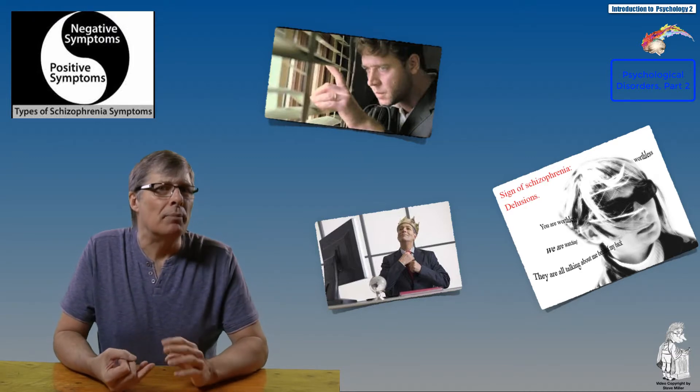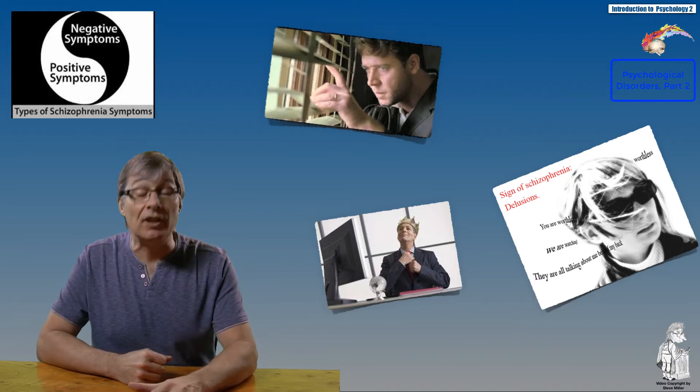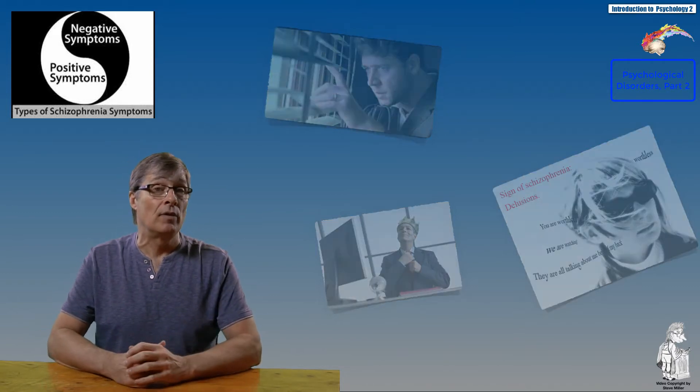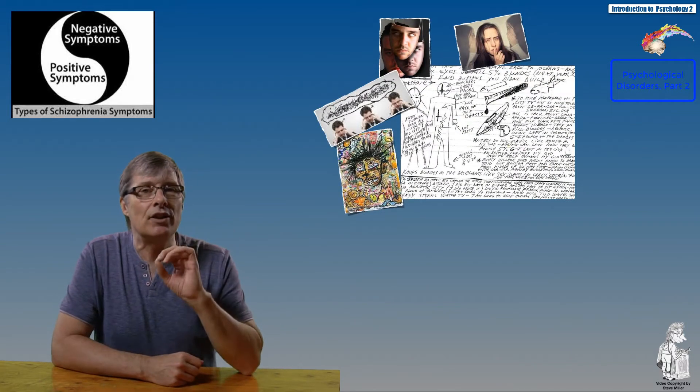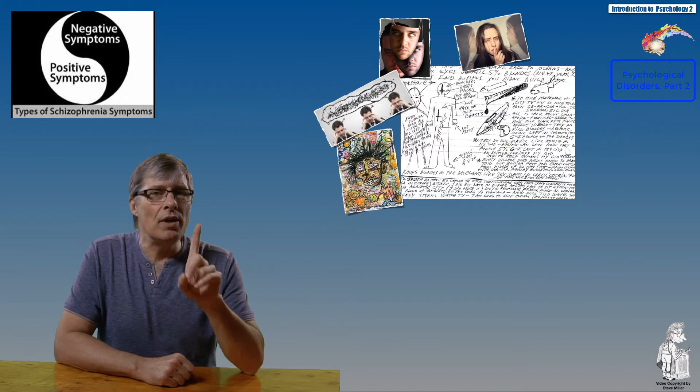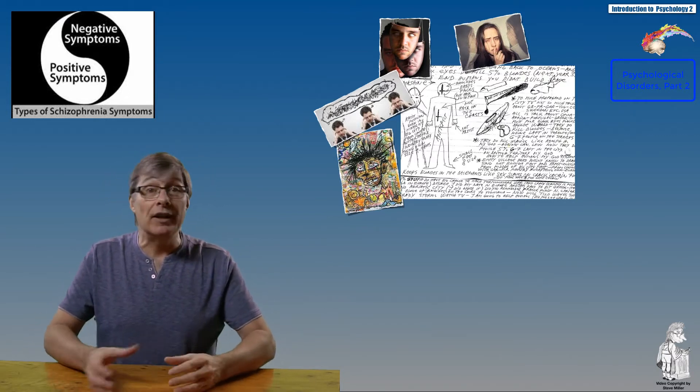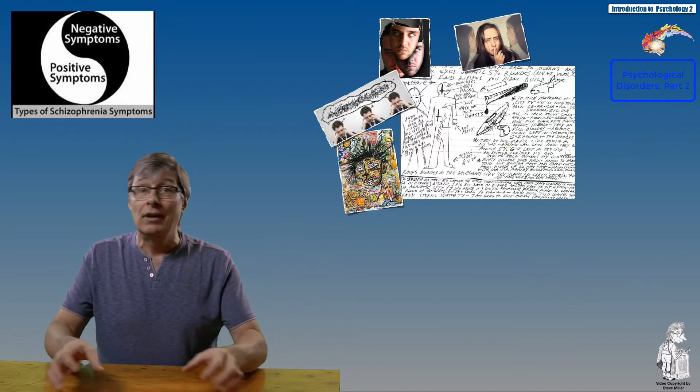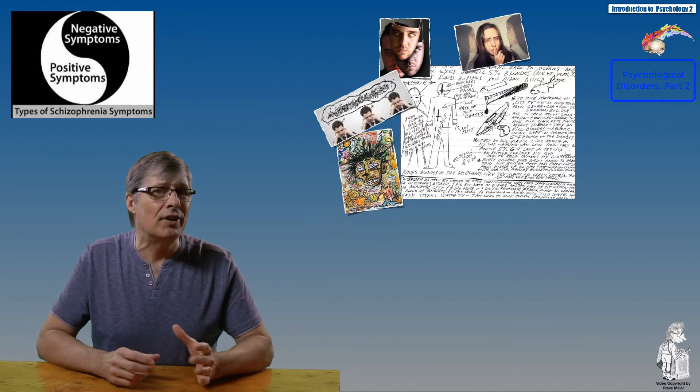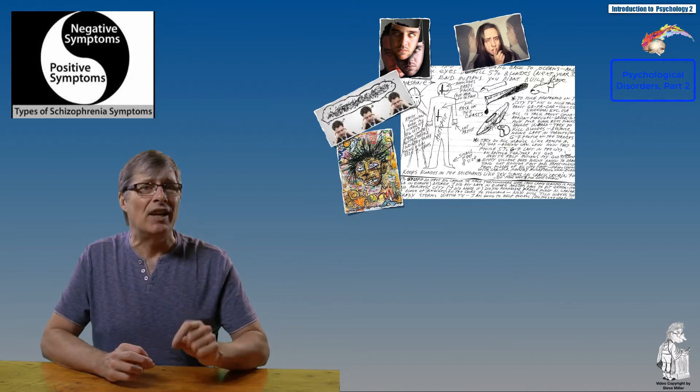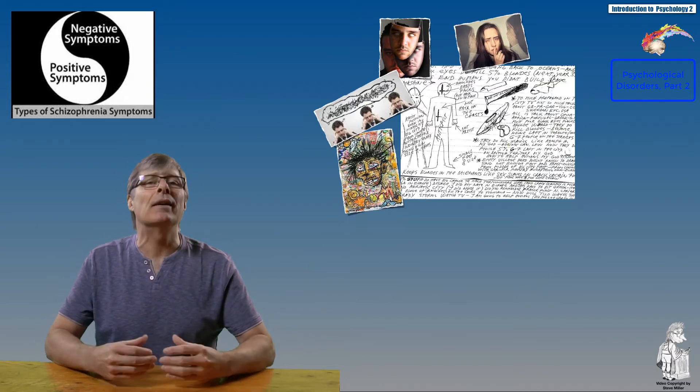Disturbances in the form of thought or speech: the individual has difficulty completing one thought and is very disorganized, moving from subject to subject with very little in common. Grossly disorganized behavior: the individual stands out in their dress, their behavior, their vocalizations—they're unpredictable and unusual.